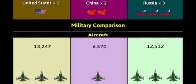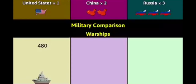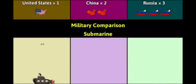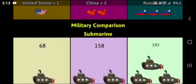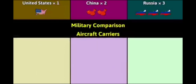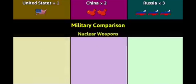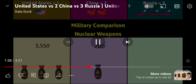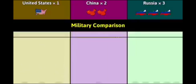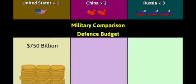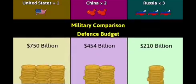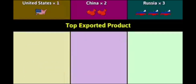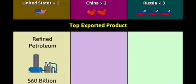Warships: 480, 1,554, 1,809. Submarines: 68, 158, 192. Aircraft carriers: 11, 1, 4. Nuclear weapons: 5,550, 700, 18,801. Defense budget: 750 billion dollars, 454 billion dollars, 210 billion dollars.